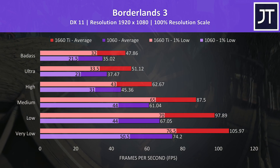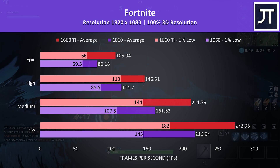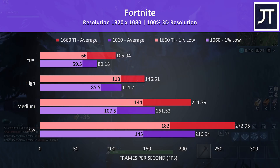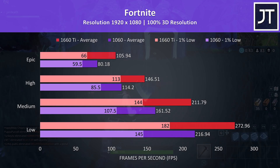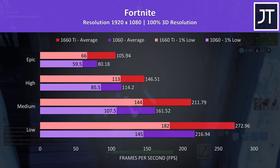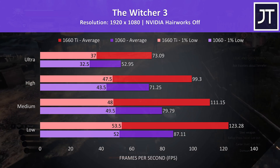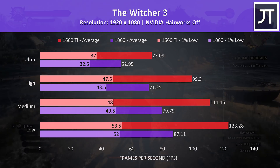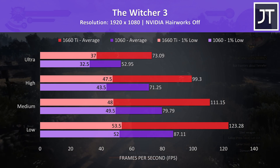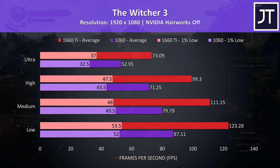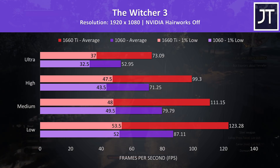Maxed out, Borderlands 3 shows a 37% lead for the 1660 Ti. Fortnite was tested using the replay feature, running through the same part of the game on both laptops. At epic settings there was a 32% higher average frame rate with the 1660 Ti, though the game played well at max settings on either machine. The Witcher 3 had similar 1% low performance regardless of graphics in use, however the 1660 Ti was 38% faster in average FPS at ultra settings.